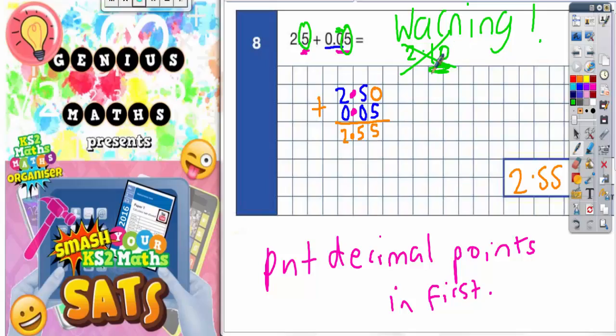Okay, so you've got to line your decimal points up, put the digits in, and then replace this with a zero, because 2.5 is the same as 2.50. And then you are guaranteed to get the right answer. Final answer: 2.55.